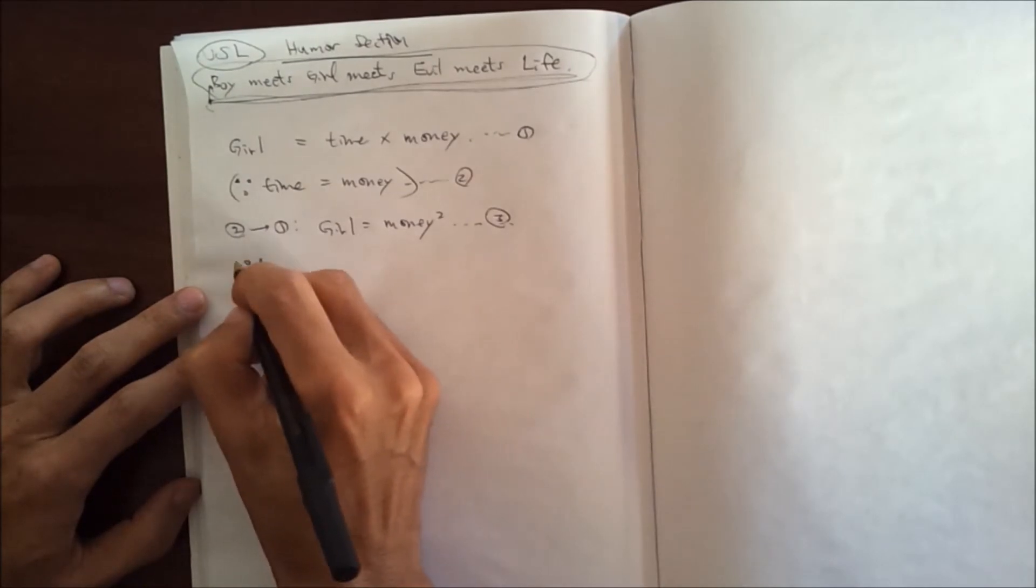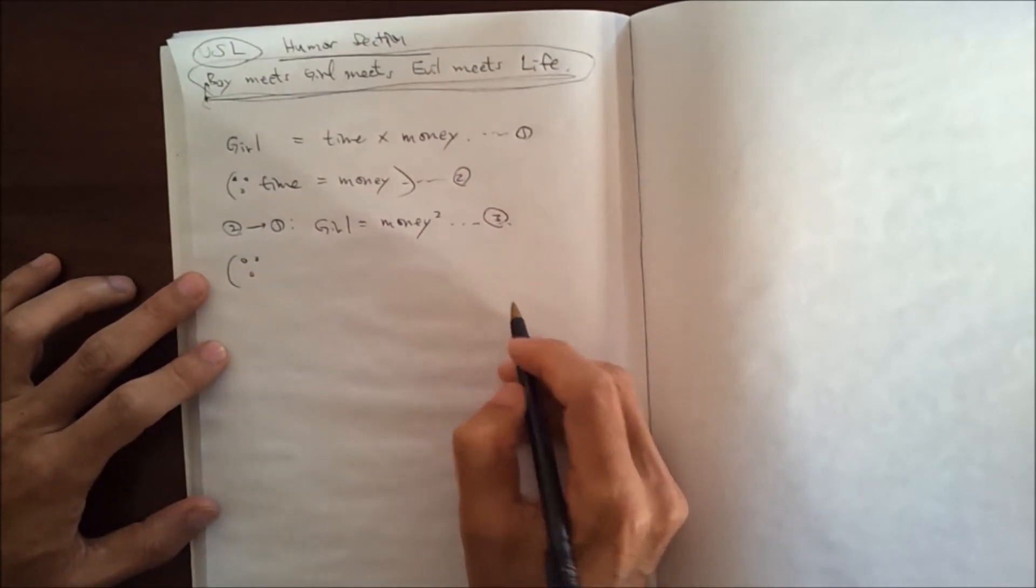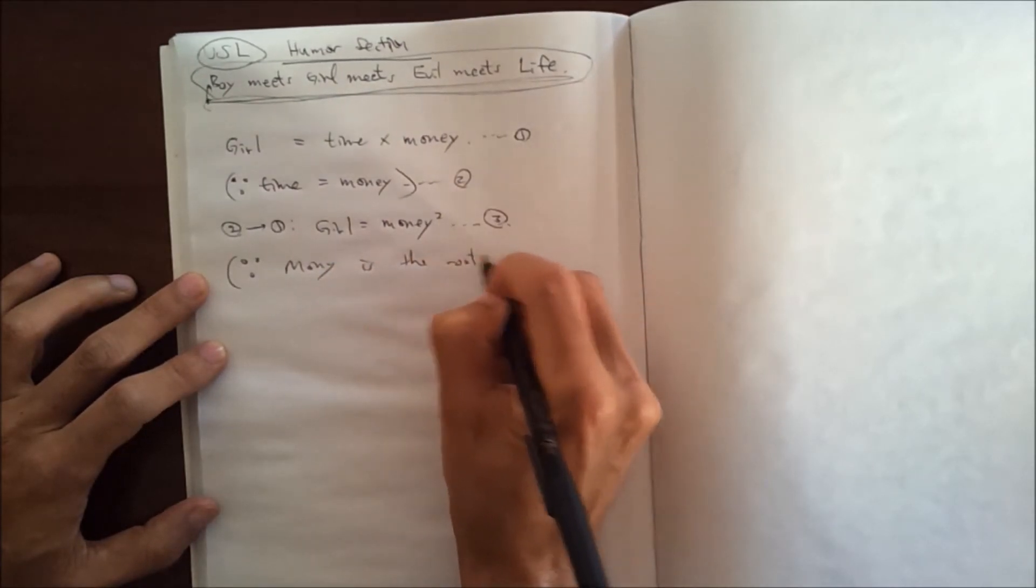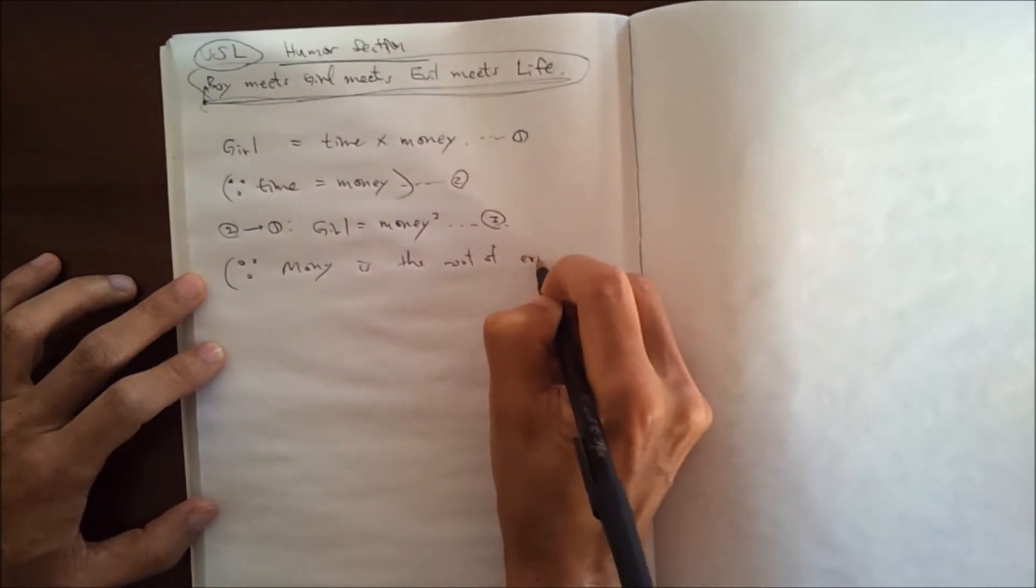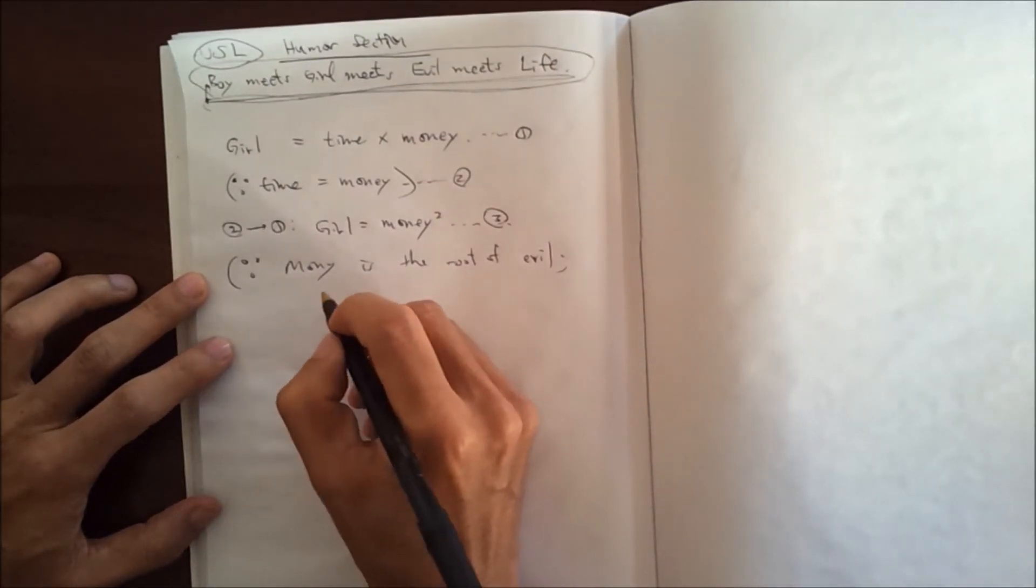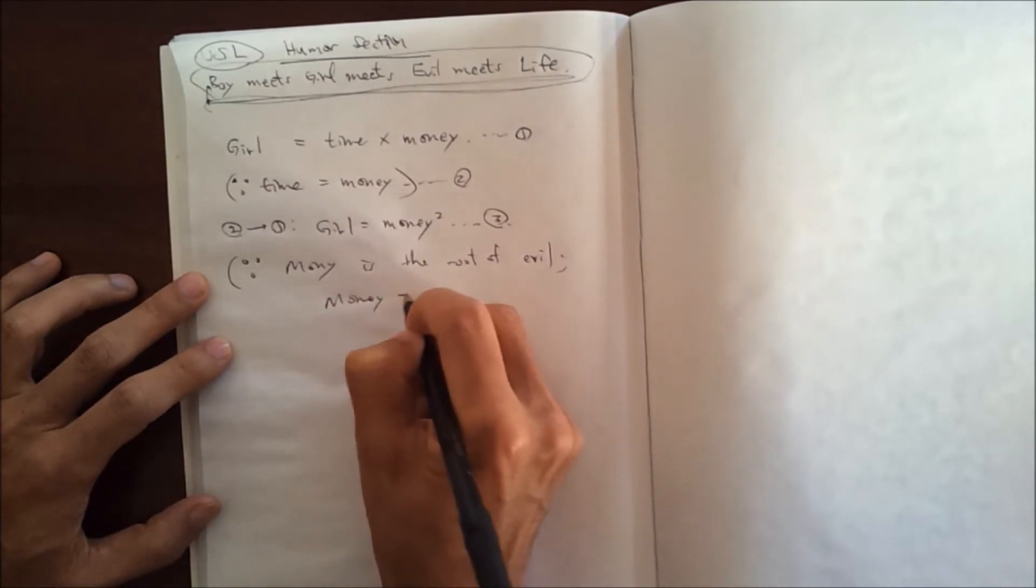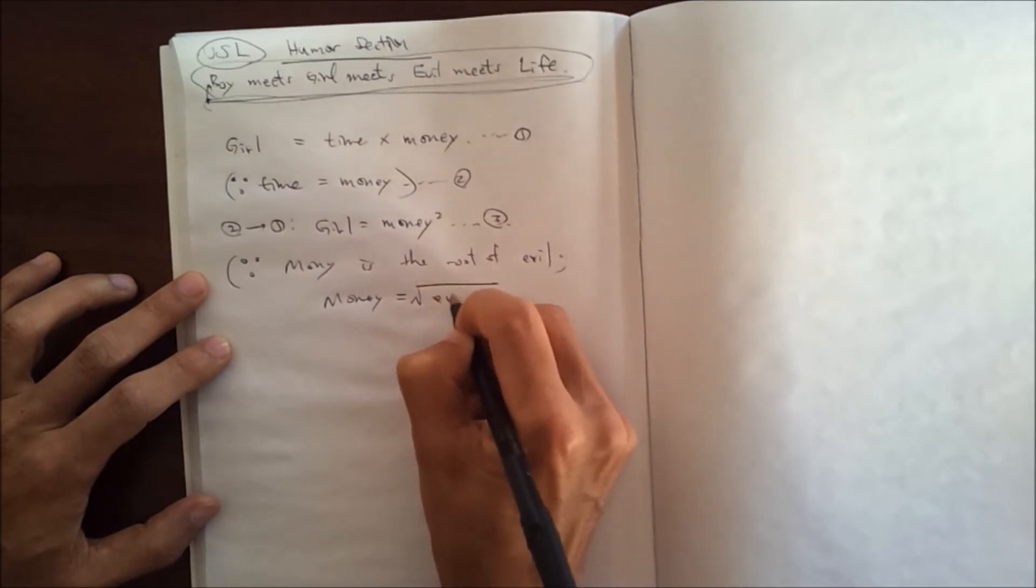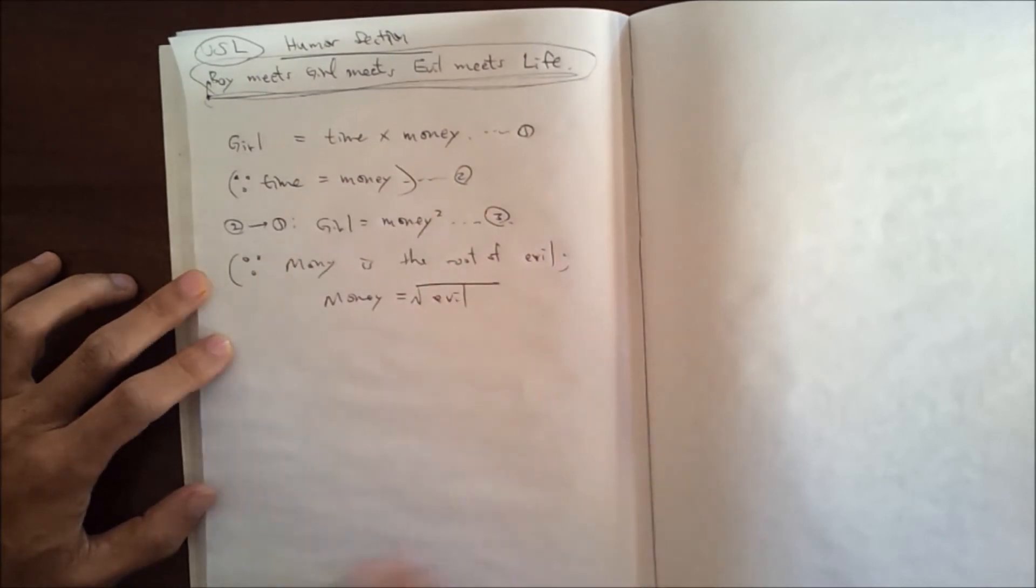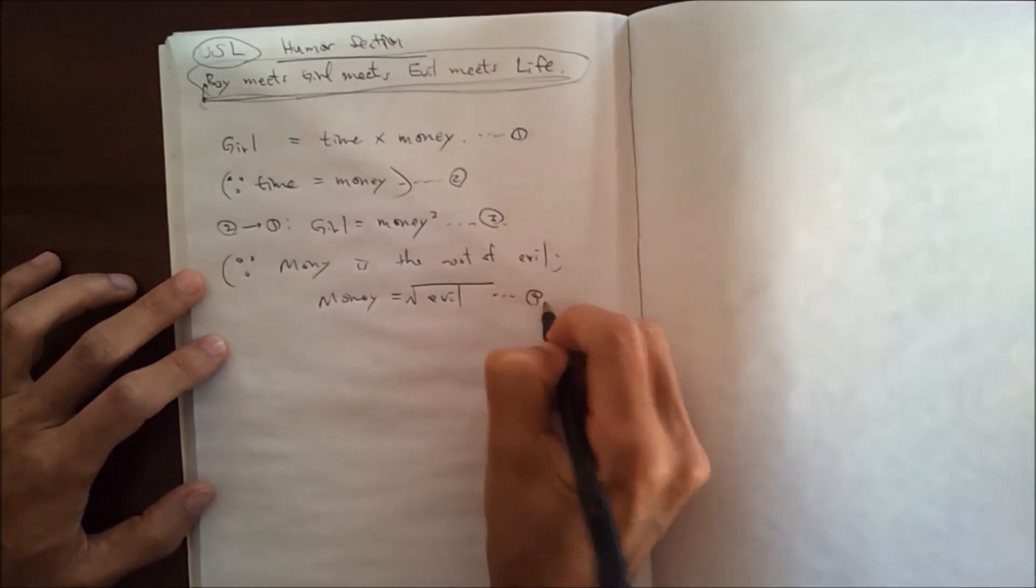And then also our common sense often says money is the root of all evil. So mathematically somebody is funny, intelligently funny enough to make it money is root of all evil.